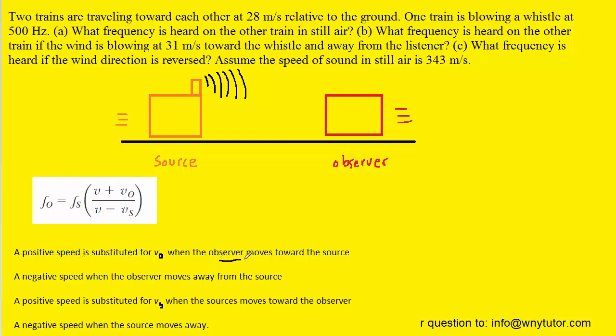And so if we read the first convention we see that we're going to use a positive speed substituted for the V0 when the observer is moving towards the source. And that's what's going on here. So we know that the speed of the observer will have a positive value.